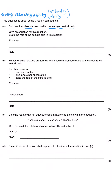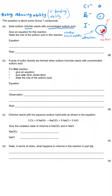As we go down the group, the chloride, bromide, and iodide ions get respectively larger. Chloride is the smallest, iodide is the largest at the bottom, and bromide is in the middle. As a result, these ions hold on to their electrons less well as the ion gets larger, because the electrostatic attraction between the positive nucleus and the outer electrons weakens with increasing distance. So in this first question, the chloride ion is such a poor reducing agent that it doesn't reduce the sulfuric acid at all.